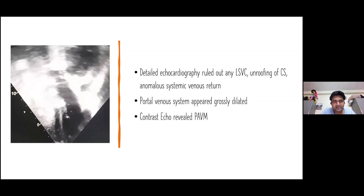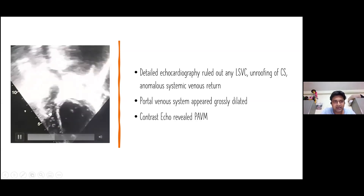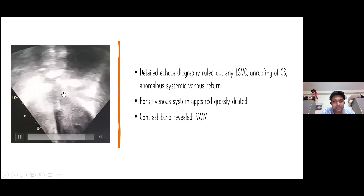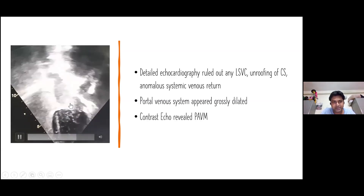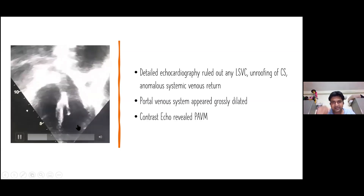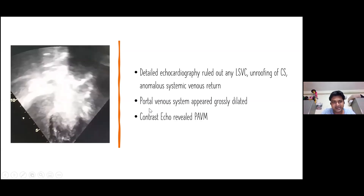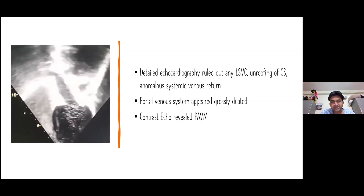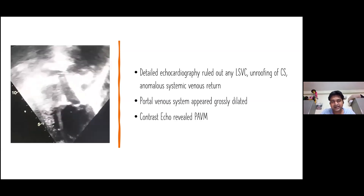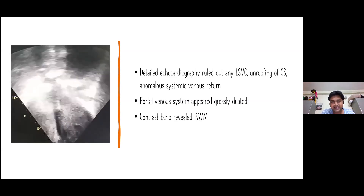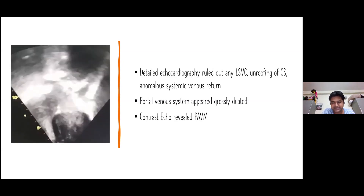At that point we planned a contrast echocardiography. As you see here, the contrast is being injected into the right heart and within one or two beats it is coming back to the LA, suggestive of pulmonary AV malformation. Surprisingly, we also noticed the portal venous system was grossly dilated — while obtaining the subcostal view we could see the liver, and inside the liver there were dilated veins suggestive of a dilated portal venous system.